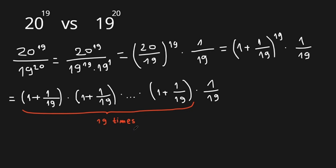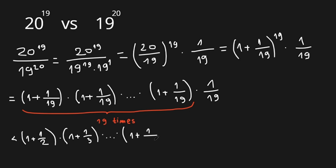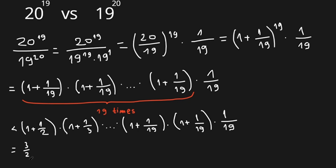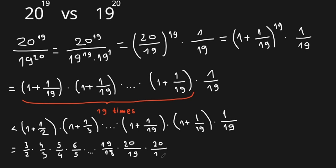Now let's replace 1 plus 1 over 19 with a larger value. We expand it as a telescoping product: 3 over 2, times 4 over 3, times 5 over 4, continuing until 20 over 19, and then times 20 over 19, and then times 1 over 19.